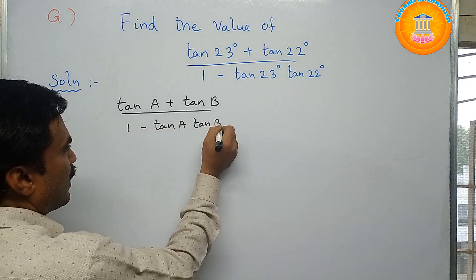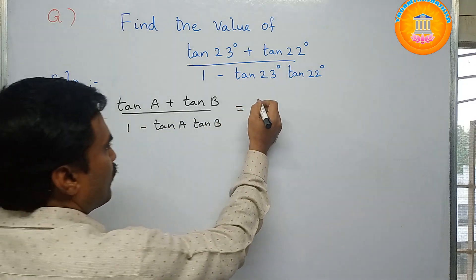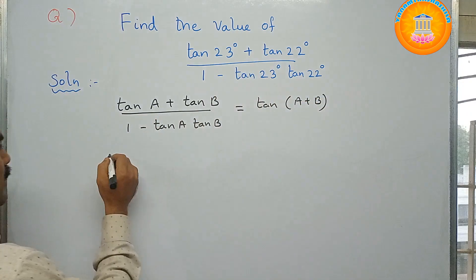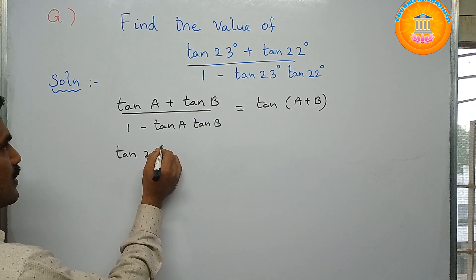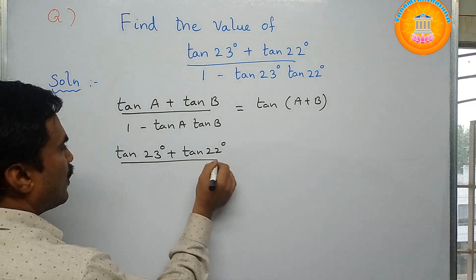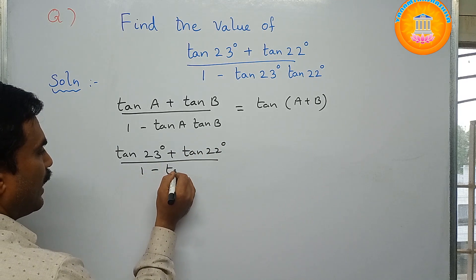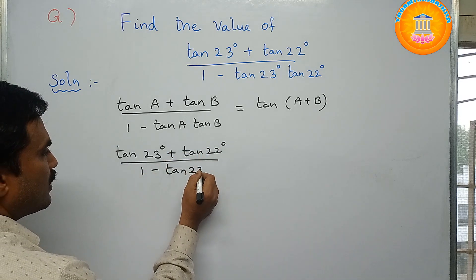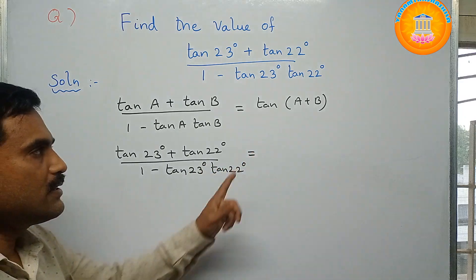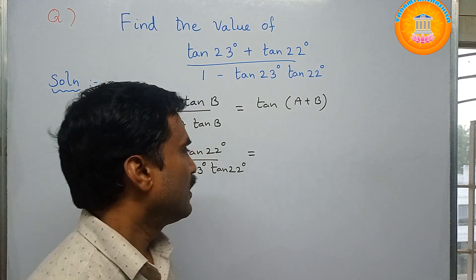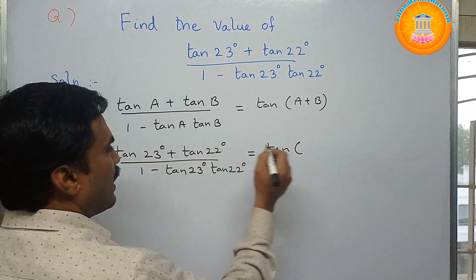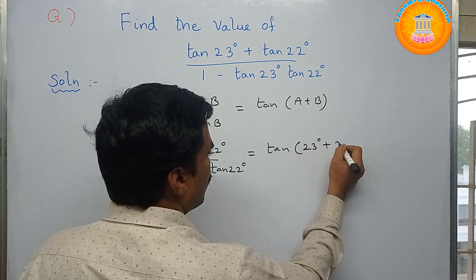So our problem is tan 23 degrees plus tan 22 degrees by 1 minus tan 23 degrees tan 22 degrees. Now right hand side is tan of A plus B, so that is tan of 23 degrees plus 22 degrees.